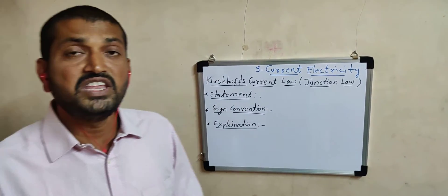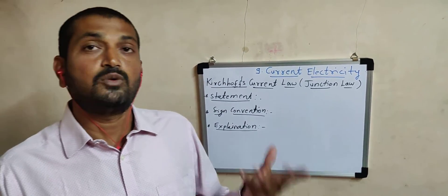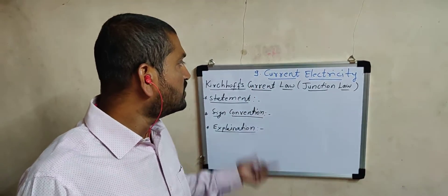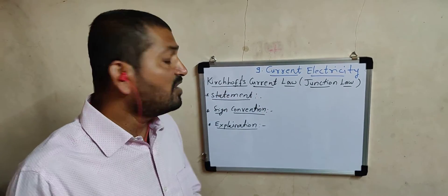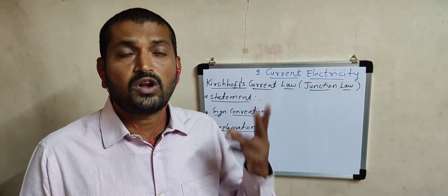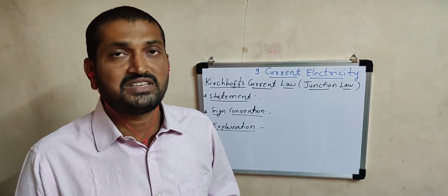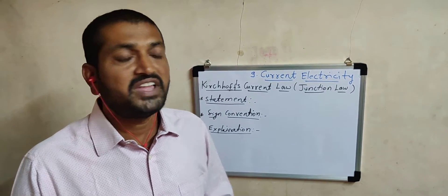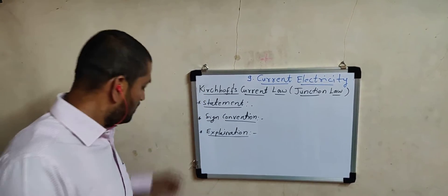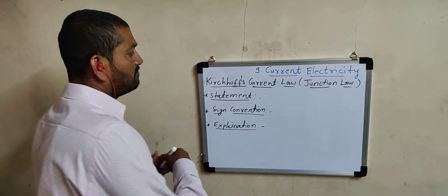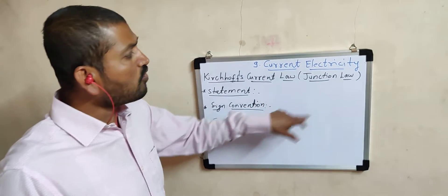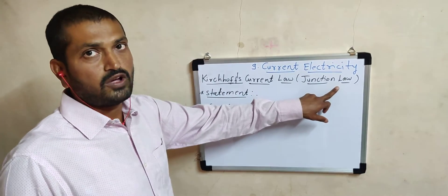That is why there is a need for certain advanced concepts. So now in 12th standard, in this topic, in the first article, we are going to discuss two important laws given by scientist Kirchhoff. The first law is Kirchhoff's current law, which is also called the junction law.